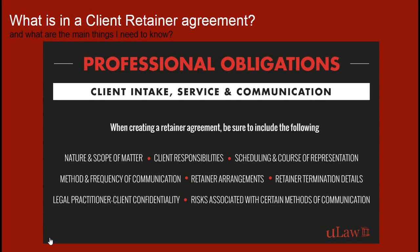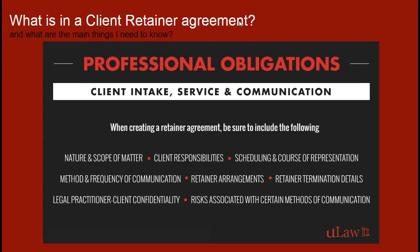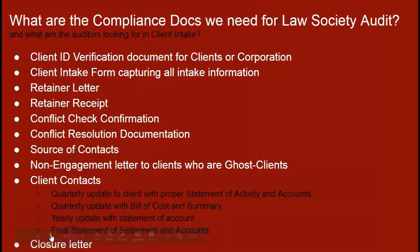This is a quick snapshot of everything we've been talking about — the key aspects of the retainer agreement as one of the most fundamental starting points, the official contract between yourself and your client. We spoke about client responsibilities, the nature and scope of the matter, anticipated court dates, and any expectations from your firm for clients to be available. Now, what are some of the most important compliance documents you would require as part of an audit?